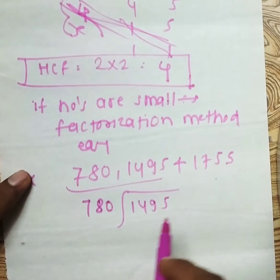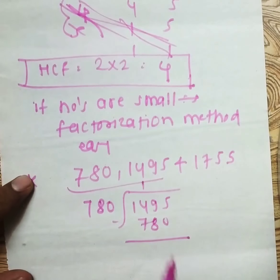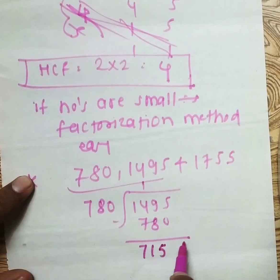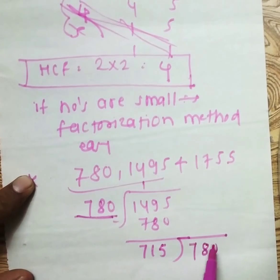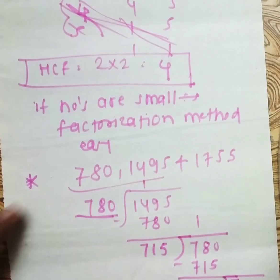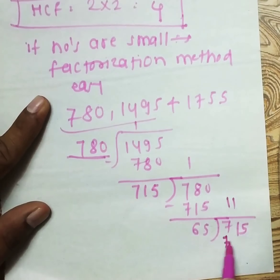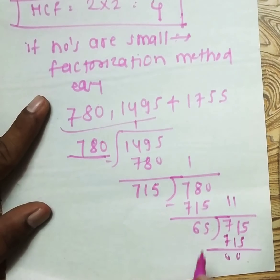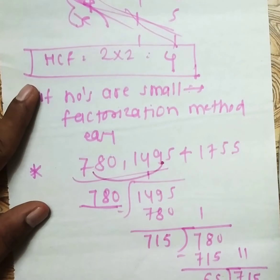In the division method, take any two numbers. Take 1495 and 780 — divide the larger by the smaller. 780 ones are 780, so the remainder is 715. Then divide 780 by 715: 715 ones are 715, remainder 65. Then 715 ÷ 65: 65 elevens are 715, remainder 0. So 65 is the HCF of 780 and 1495.